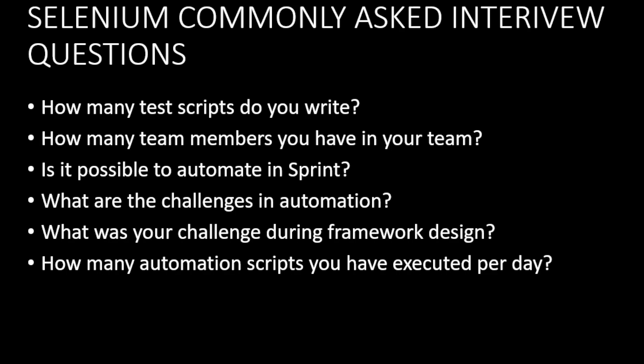The next question is: what are the challenges in automation? One challenge is how to write a method that works irrespective of changes in the UI. UI changes happen regularly, so how our method continues to work despite those changes is a major challenge. We need to create methods accordingly, and also handle dynamic objects like IDs, class names, and CSS selectors.